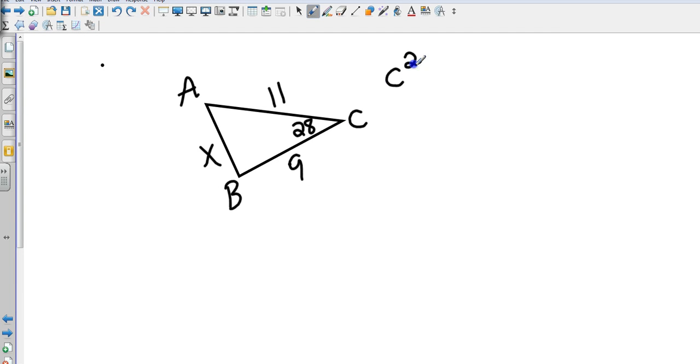So this will be c² equals a² plus b² minus 2ab cosine of angle c. So let's start filling in things we know.